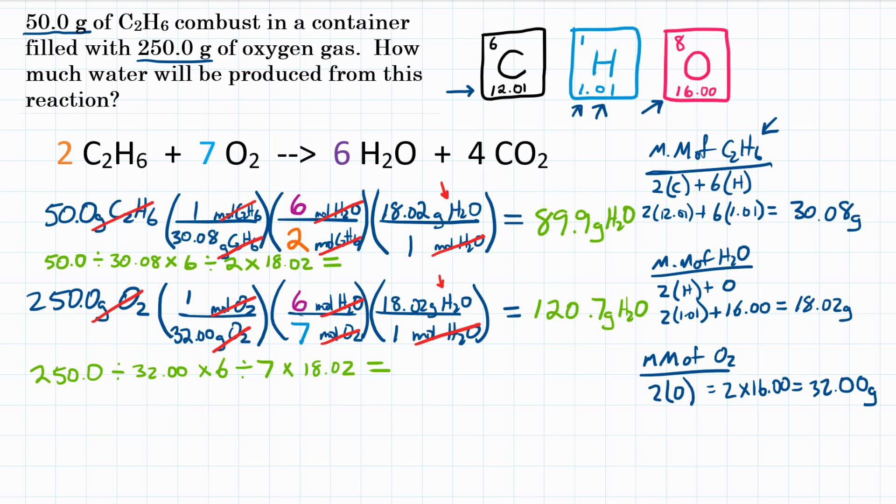So now we compare those two values. So we have 89.9 grams of H2O and 120.7 grams of H2O. Which of those is less? Well, that would be 89.9. So that means that all of our 50 grams of C2H6 will react. That makes C2H6 our limiting reactant. All that we have will react.